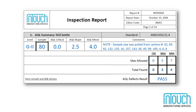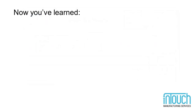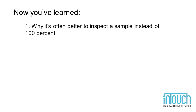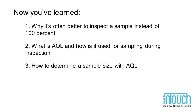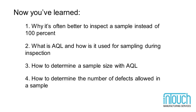Here's what an AQL result might look like in an actual inspection report. Now you've learned why it's often better to inspect a sample instead of 100%, what AQL is and how it's used for sampling during inspection, how to determine a sample size with AQL, and how to determine the number of defects allowed in a sample.